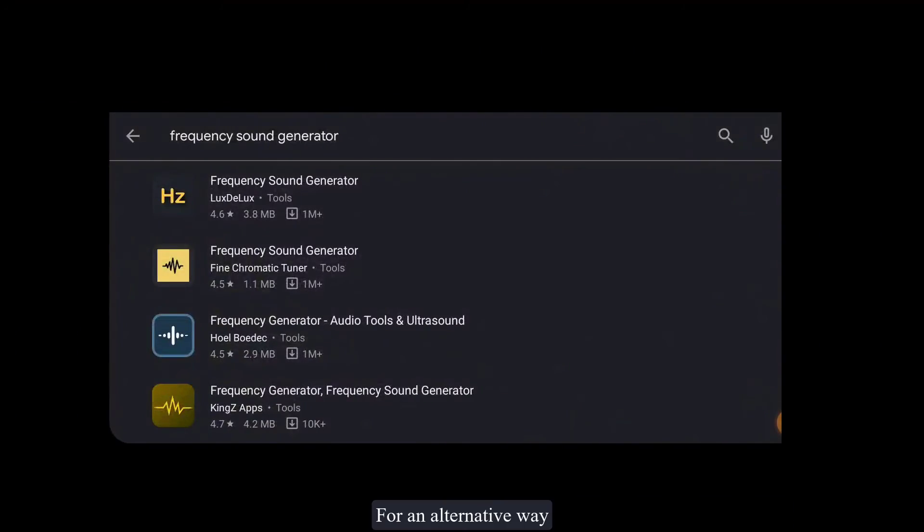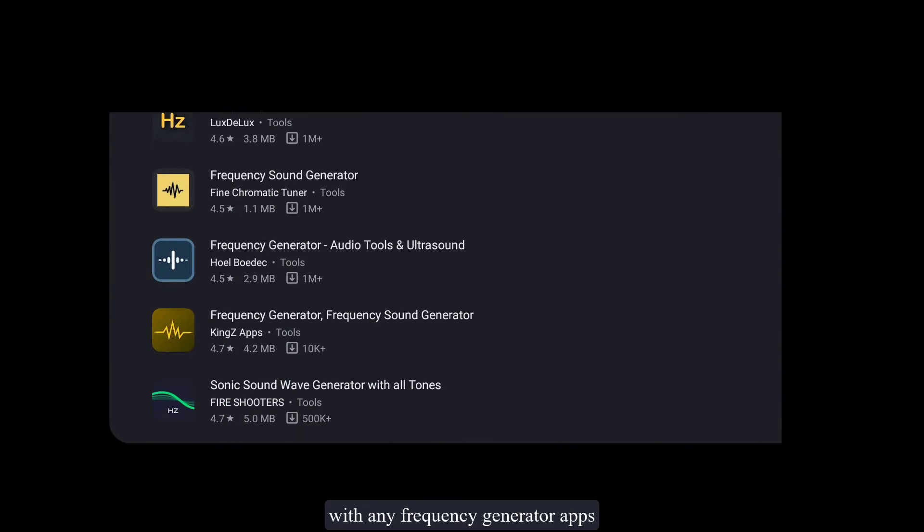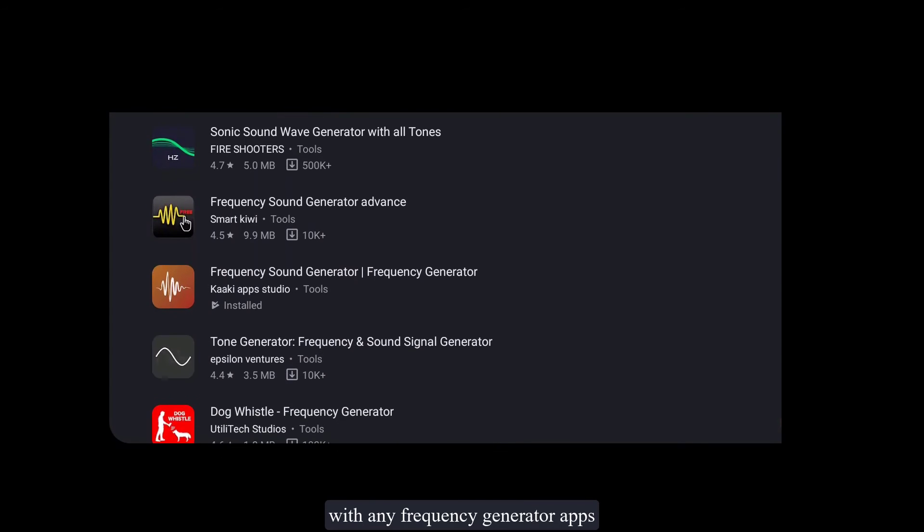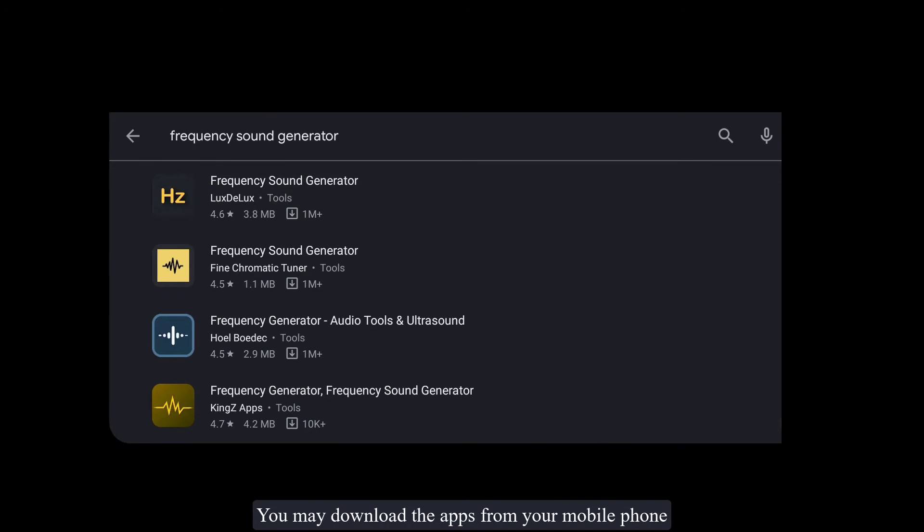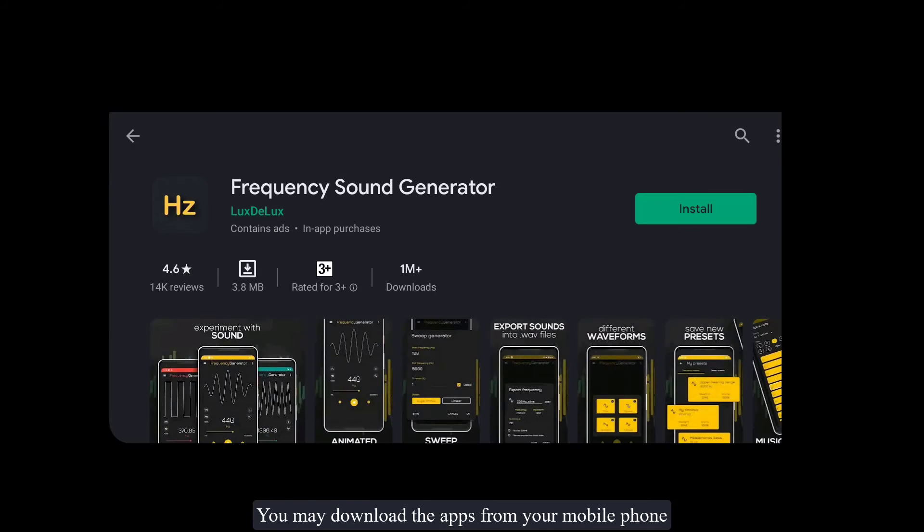For an alternative way, you may replace the signal generator and the loudspeaker with any frequency generator apps. You may download the apps from your mobile phone.